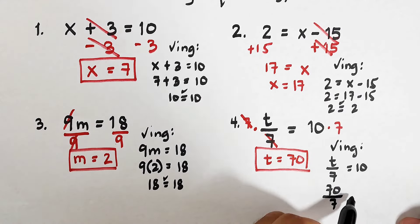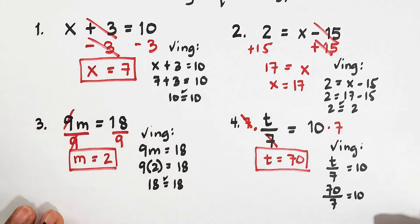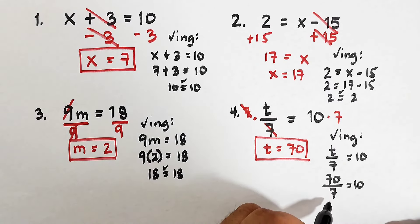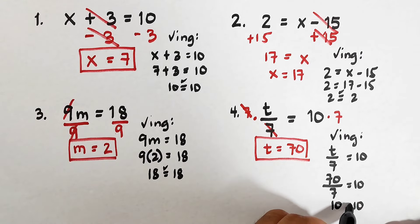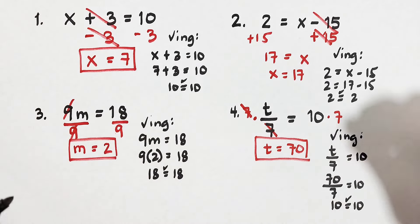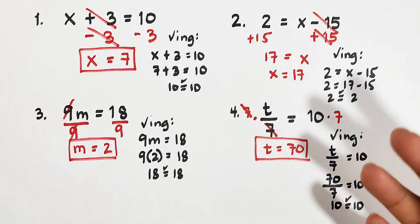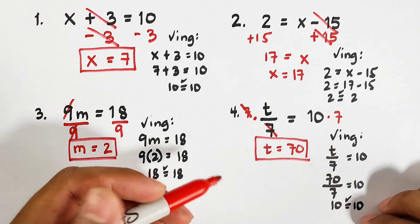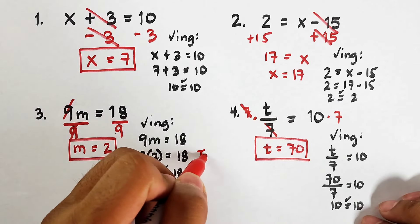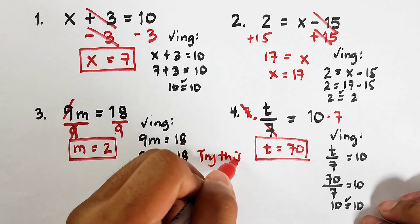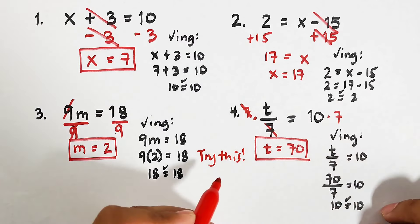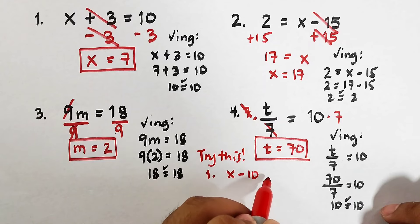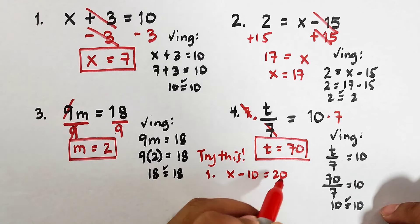On the other side, we have 10 times 7, which is equal to 70. So t equals 70 — that is the final answer. To check: t over 7 is equal to 10. Substituting t with 70, we get 70 divided by 7, which is 10. And 10 equals 10 — yes, they are equal.